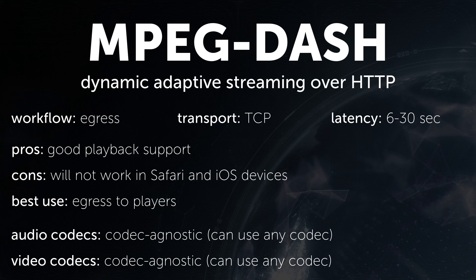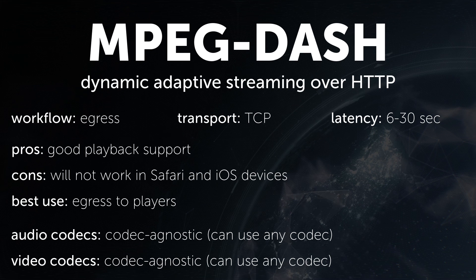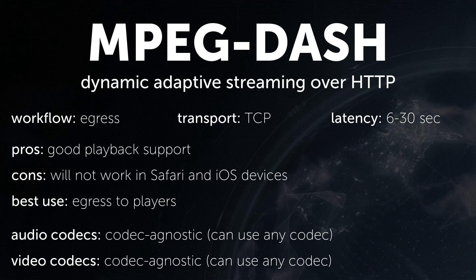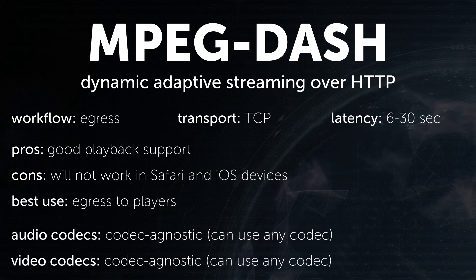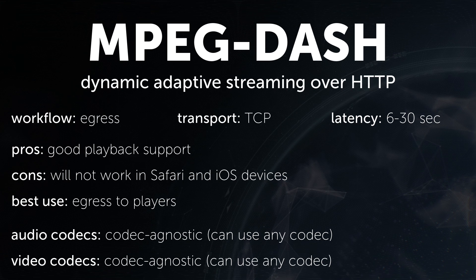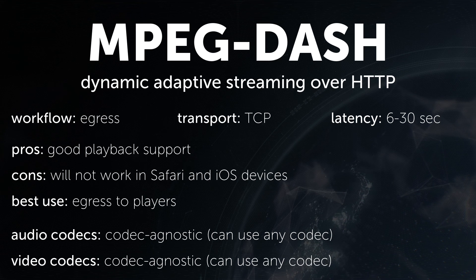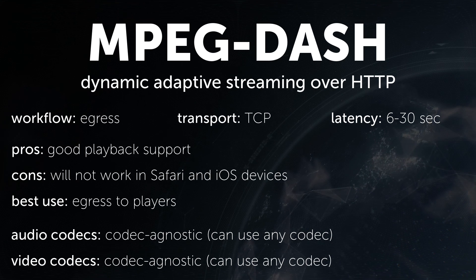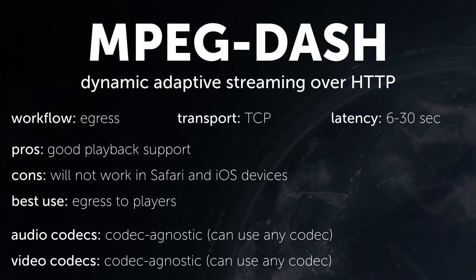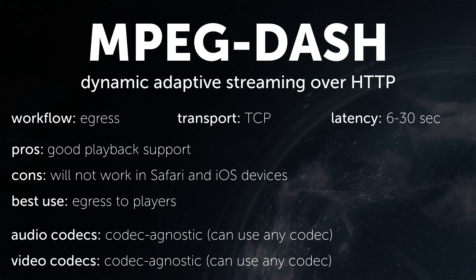DASH is often called MPEG-DASH as it was developed by the Motion Pictures Expert Group. It also uses TCP and is HTML5 compatible. It's also codec-agnostic, an open-source standard, and supported almost everywhere but on Apple devices. As it can't be used in Safari or on an iOS device, this creates a challenge for those looking to stream with it. With low-latency HLS soon to arrive and iOS users representing over 25% of the global mobile operating systems in use, it's doubtful DASH will be accepted by Apple anytime soon.